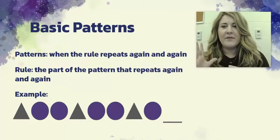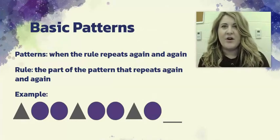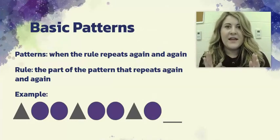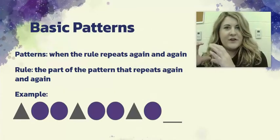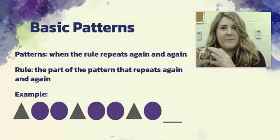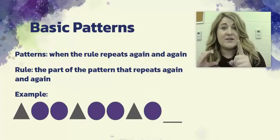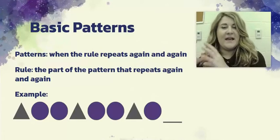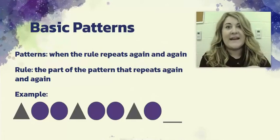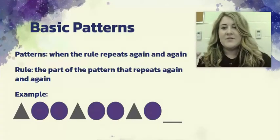The part of the pattern that repeats itself again and again is called the rule. The rule is usually the first part of the pattern. Once it starts to repeat itself, you know that's the rule — and that repeating is what makes the pattern.